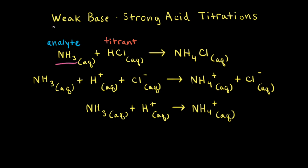Ammonia is an example of a weak base and hydrochloric acid is an example of a strong acid. In a weak base/strong acid titration, ammonia is the analyte and hydrochloric acid is the titrant. When ammonia reacts with hydrochloric acid, the product is an aqueous solution of ammonium chloride.